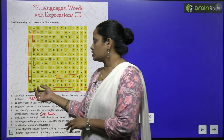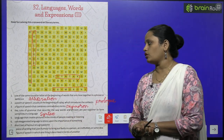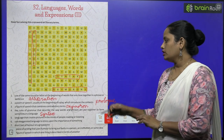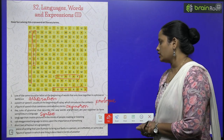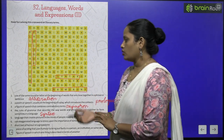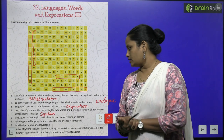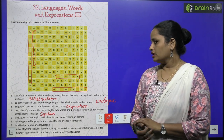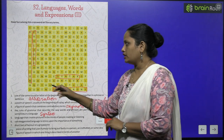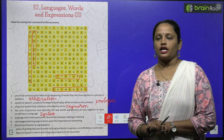The first one is the use of the same sound or letter at the beginning of words that are close together in a phrase or sentence. This is called alliteration, and here we have marked it.